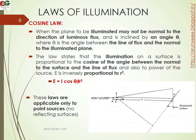So the formula is E equals I cos theta divided by r squared. These two laws — inverse square and cosine — are applicable only when the point source has no reflecting surfaces. They work for light sources and point sources, but do not apply when reflecting surfaces are present.